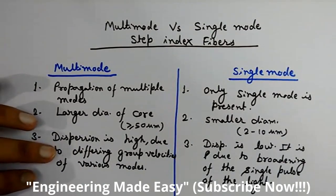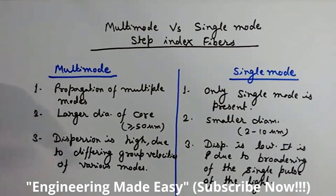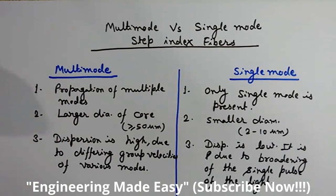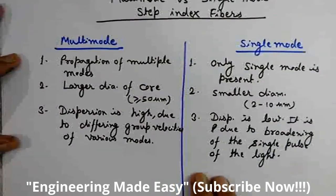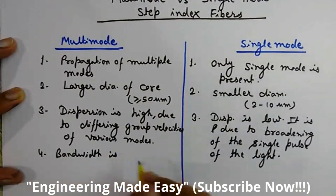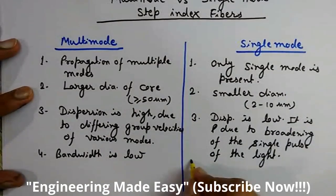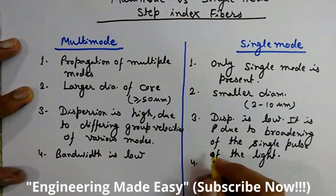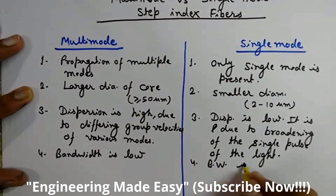In multi-mode fibers, various modes of light travel through the fiber with different path lengths — some rays travel close to the axis of the core while others travel away from it — resulting in different group velocities and causing dispersion. The fourth comparison point is bandwidth: the bandwidth of multi-mode step index fibers is lower because of this dispersion, while the bandwidth of single mode fibers is higher.